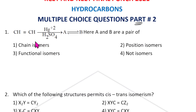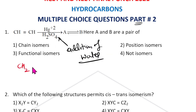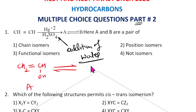First question: CH≡CH reacts with Hg2+ and H2SO4 — remember this is addition of water. CH triple bond CH with water added gives CH2=CHOH.